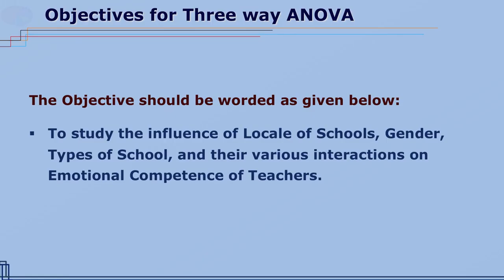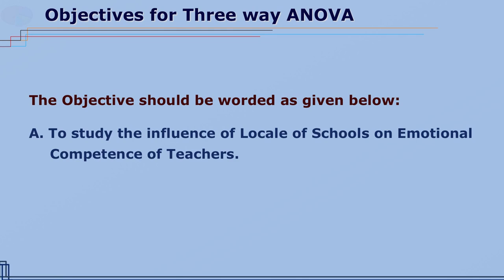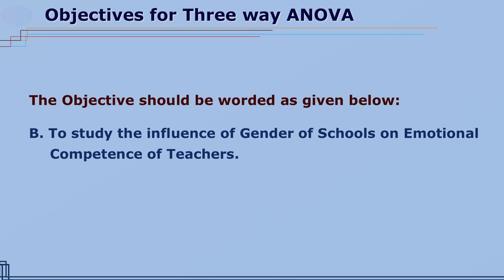The objectives can be worded like this: to study the influence of locale of schools, gender, types of schools, and their various interactions on emotional competency of teachers. The objectives can also be formulated separately as: A) to study the influence of locale of schools on emotional competence of teachers; B) to study the influence of gender on emotional competence of teachers; C) to study the influence of types of school on emotional competence of teachers.